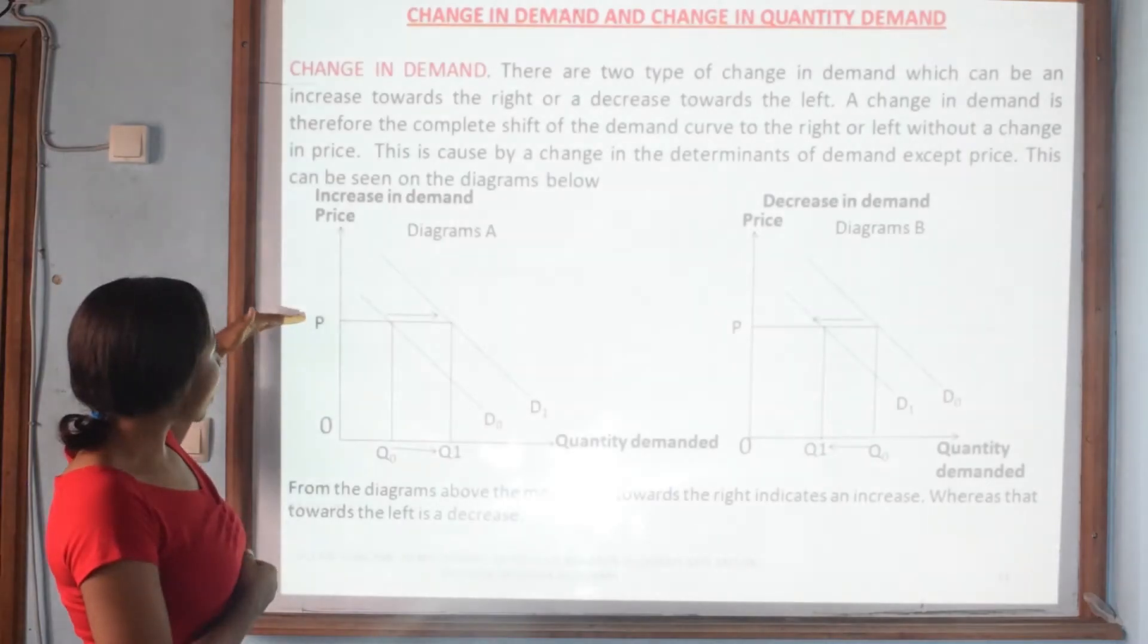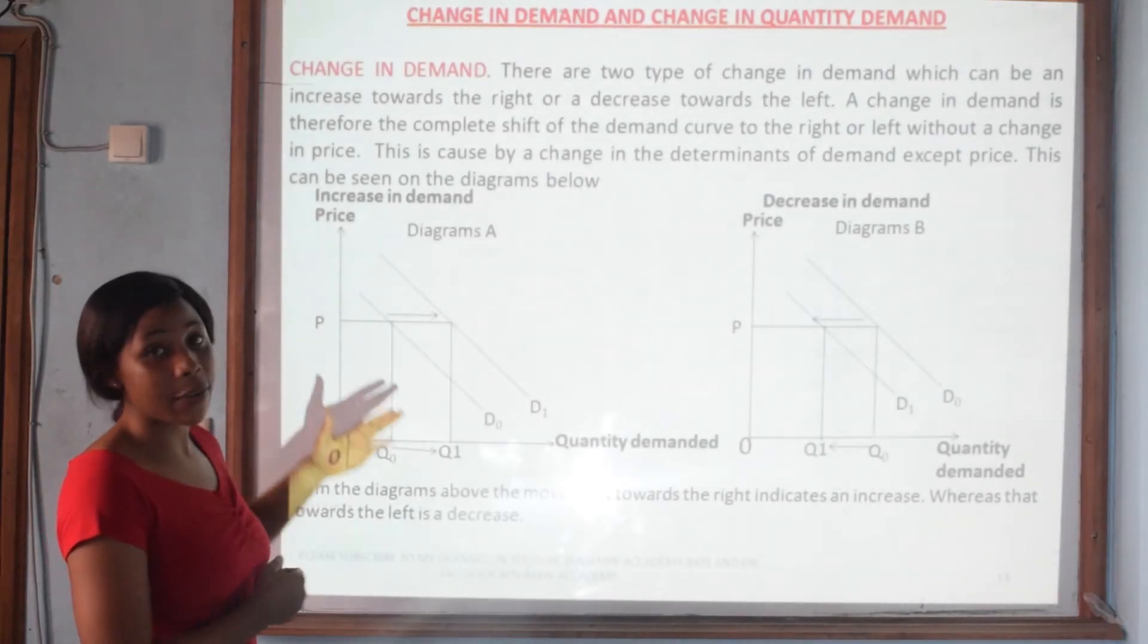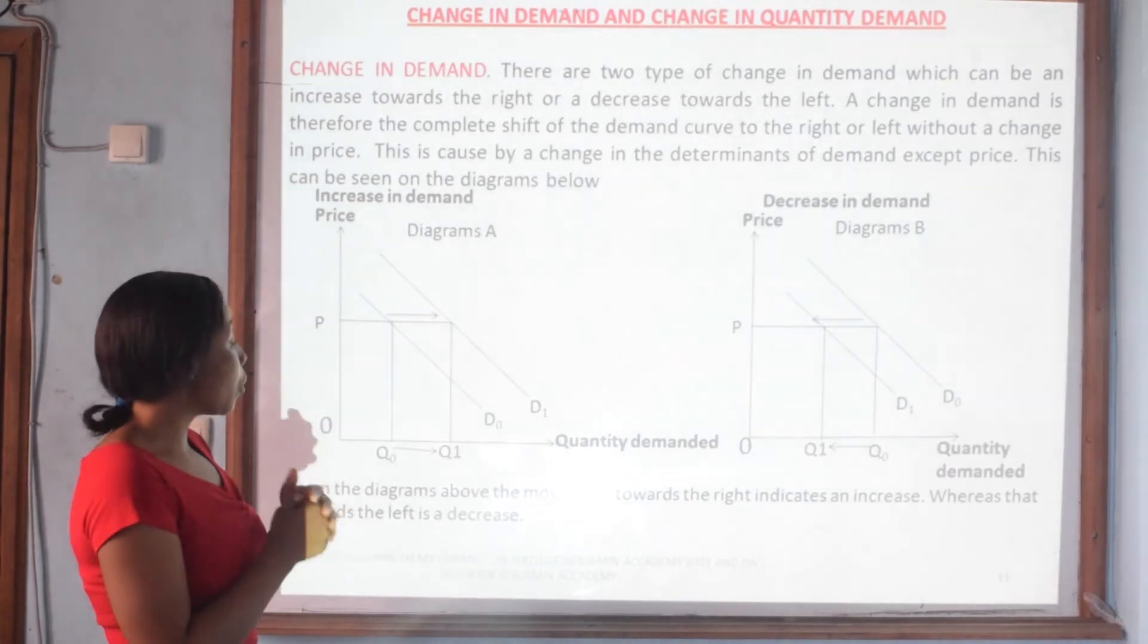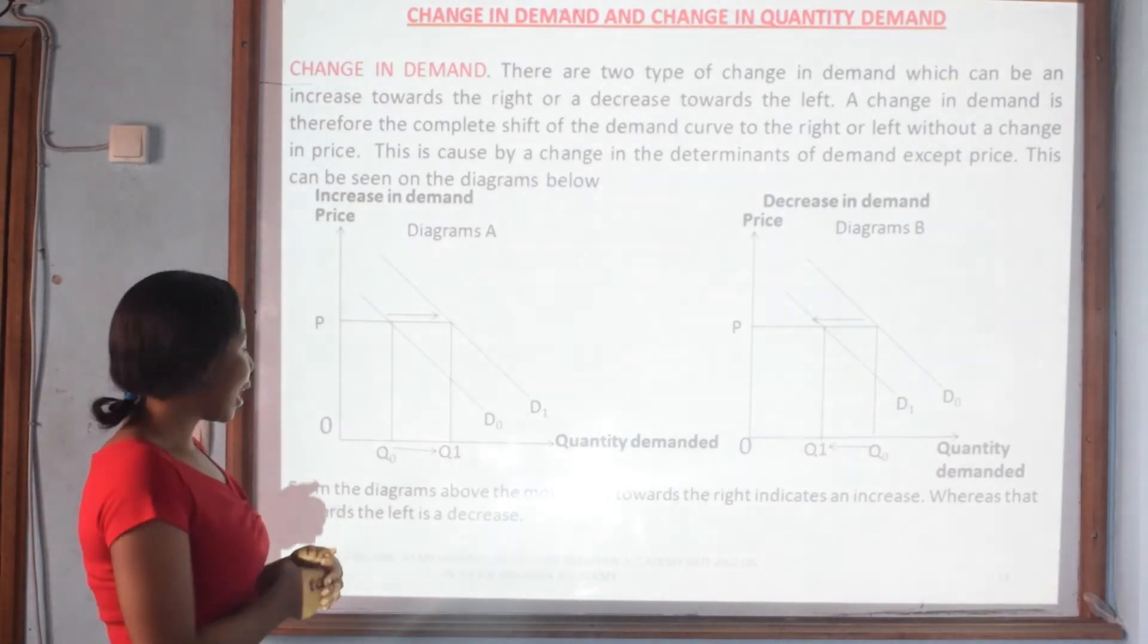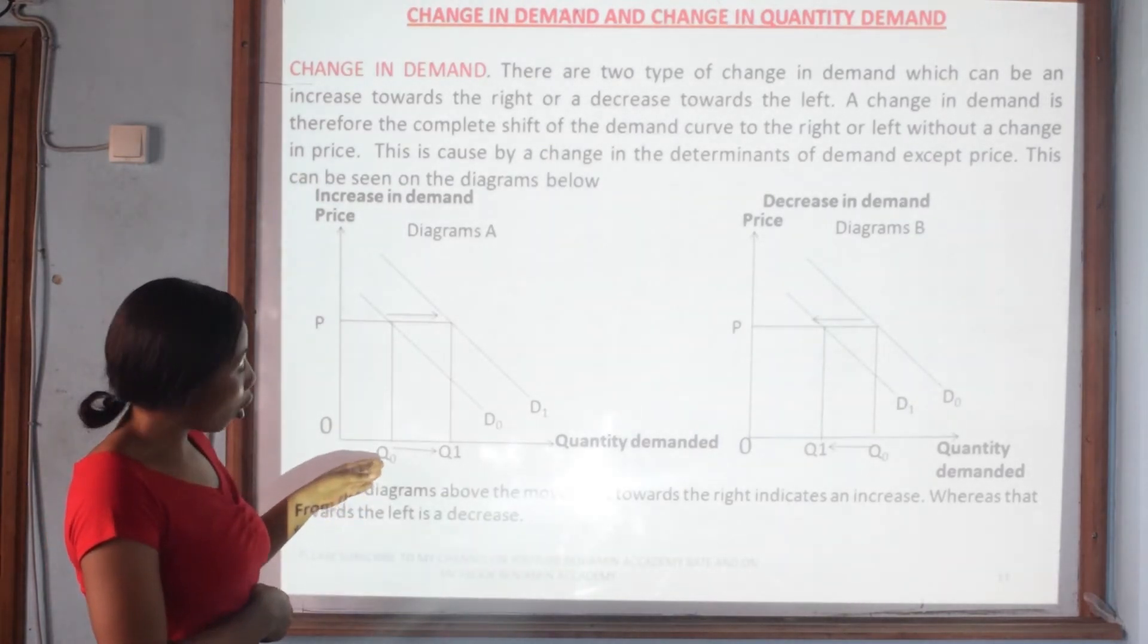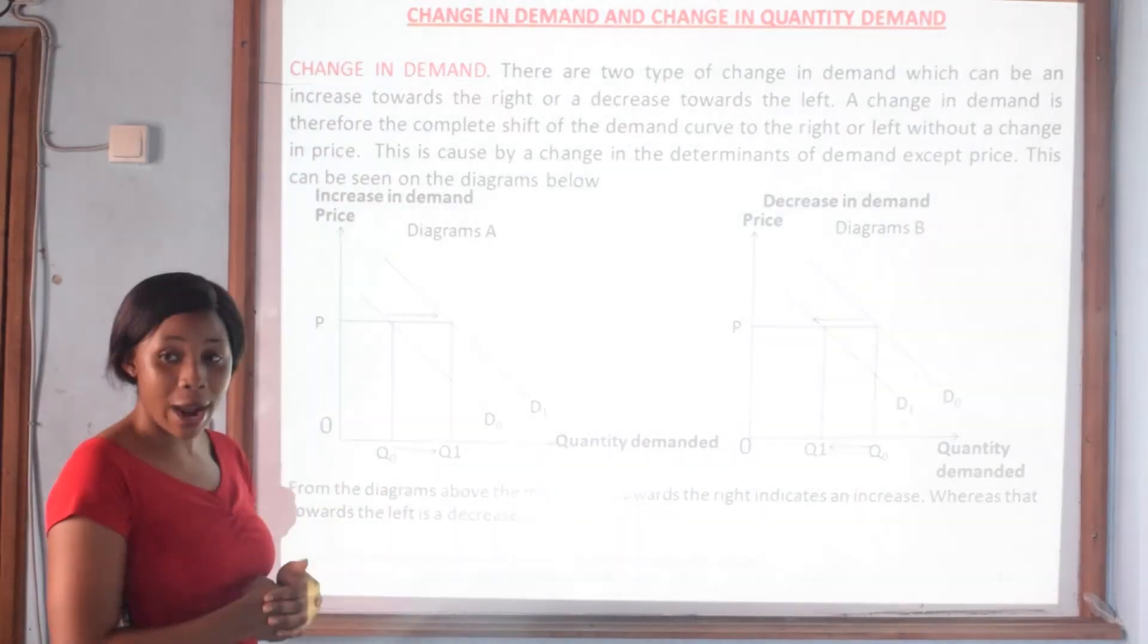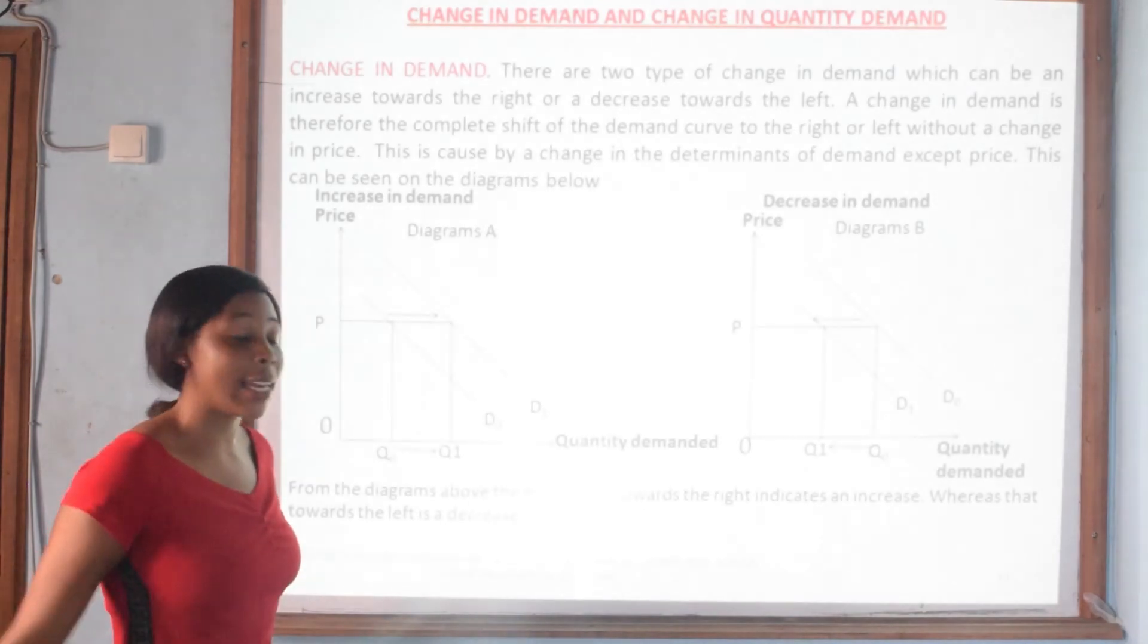With the increase in demand, we see that price is held constant. Now let's take for example, if a company carries out an advertising campaign and the effect of it is successful, it will cause demand to increase, that is moving from Q0 to Q1, and this will cause the demand curve to shift to the right, which is in effect an increase in demand.